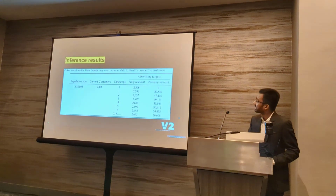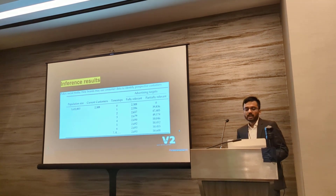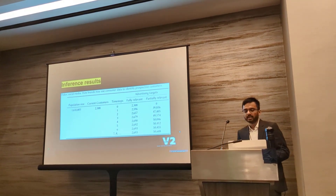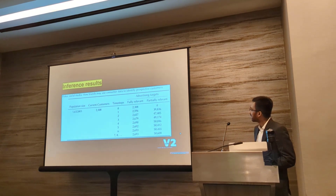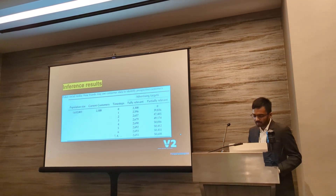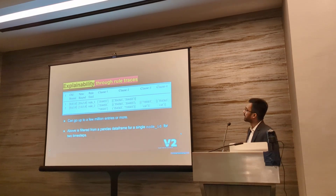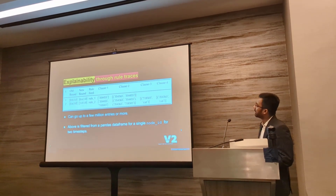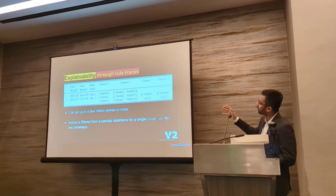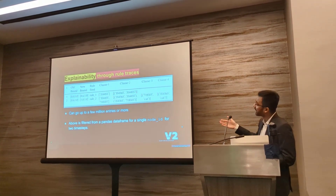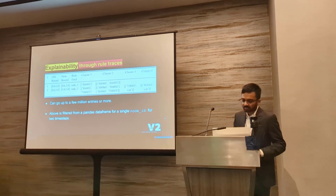The inference results for this experiment: the population size in this network is 1.6 million people. We selected around 2,300 people who had pets and ran inference until it converged. The results look sensible for this setting. Our focus is on explainability and scalability, and this is the rule trace output — something that can be used extensively for this application. This is filtered from a Pandas dataframe for a single node ID for two time steps, but it can go up to a few million entries for the full inference process.